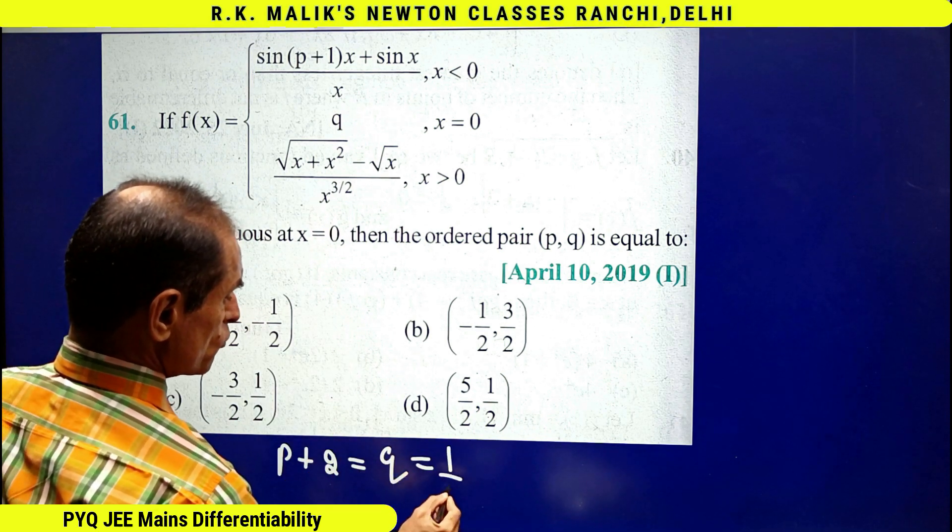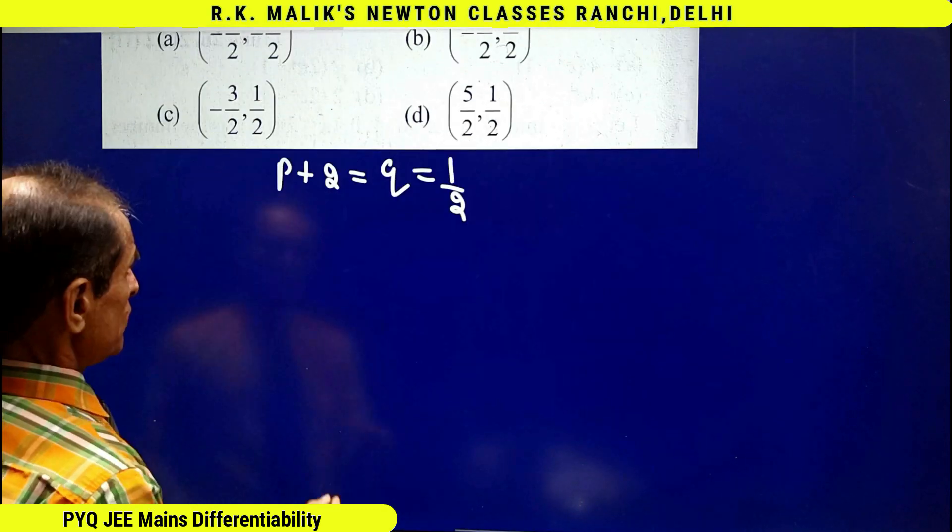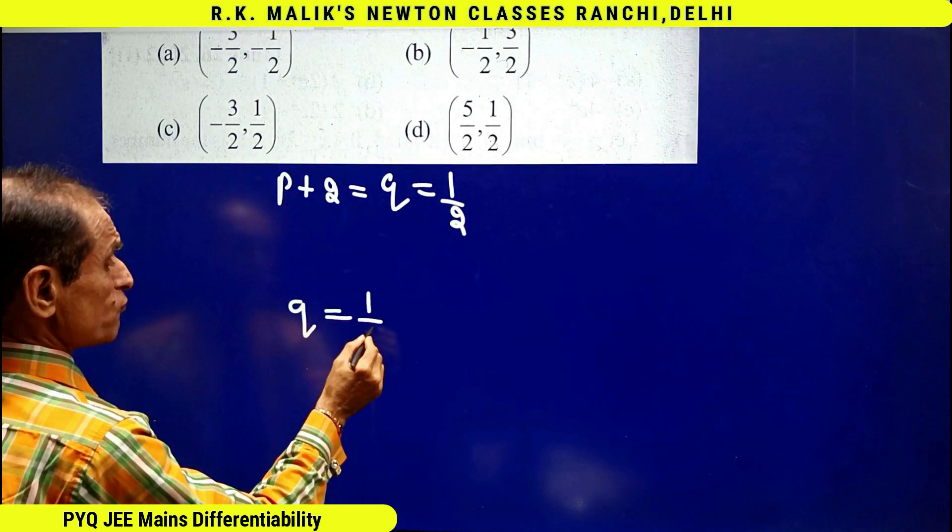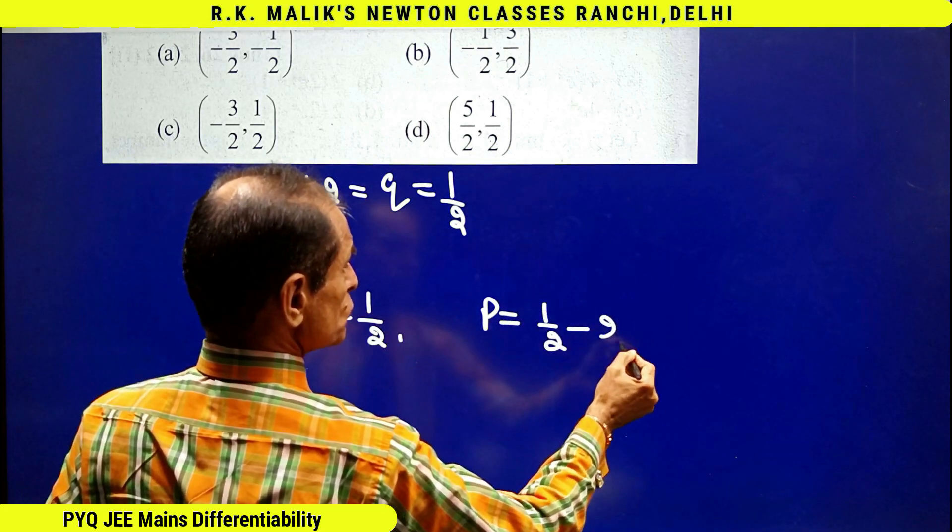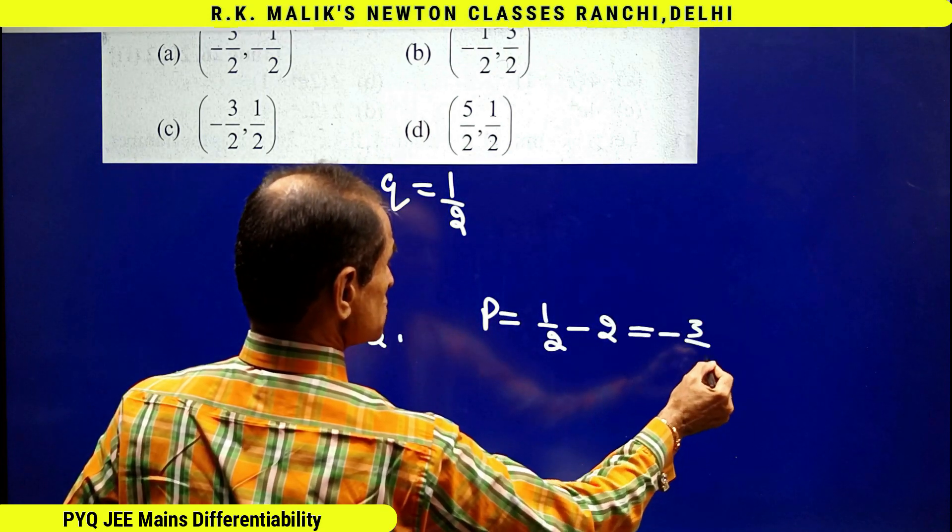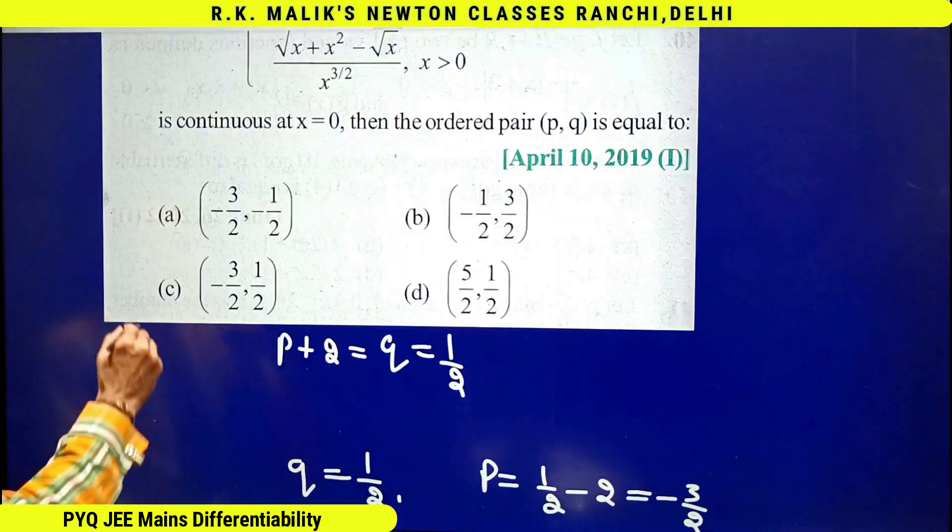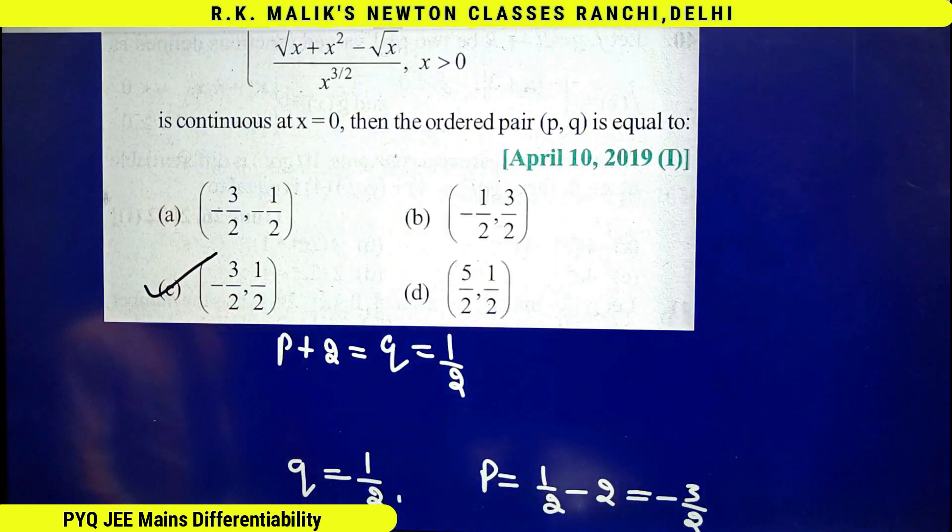That is, we have got the value of q as 1/2 and p becomes 1/2 - 2, that is -3/2. Hence I can say C is the correct choice.